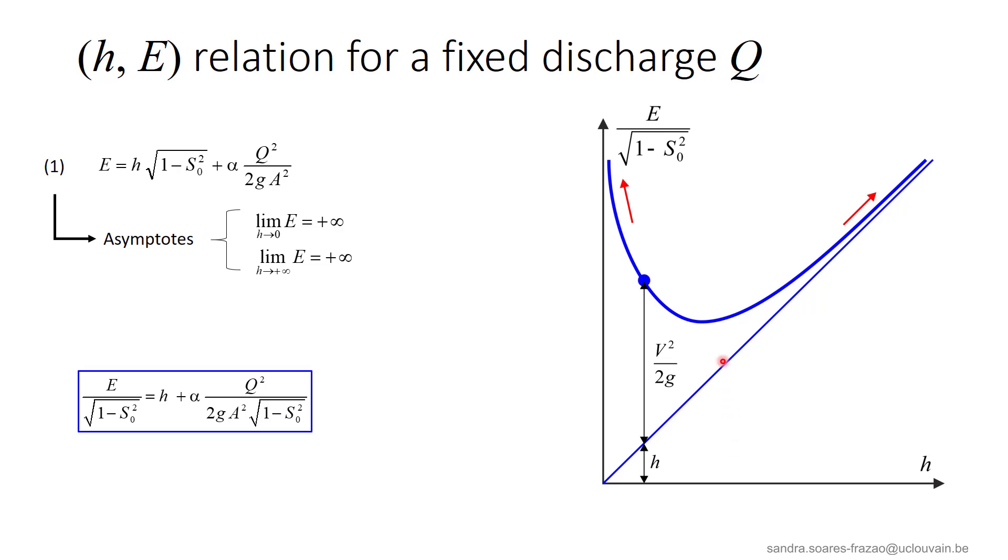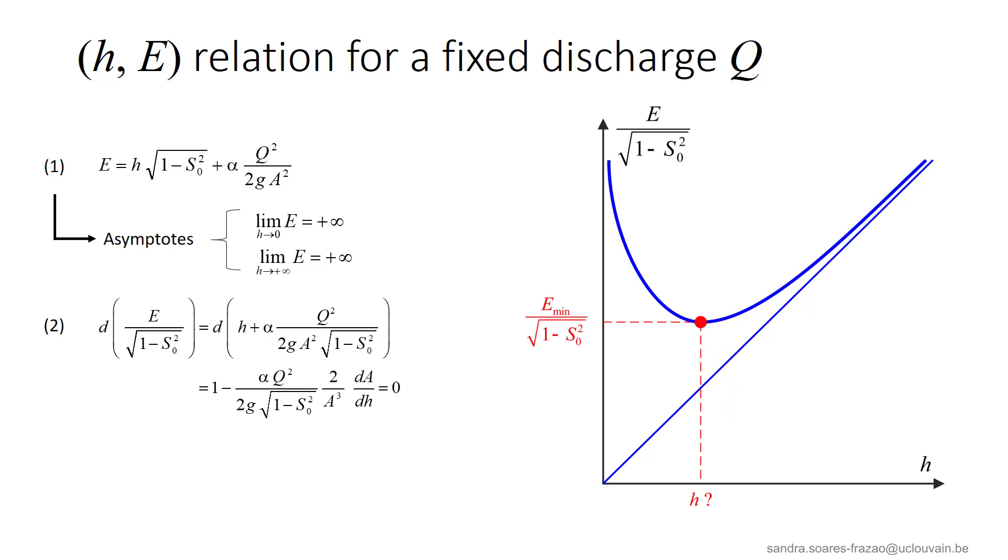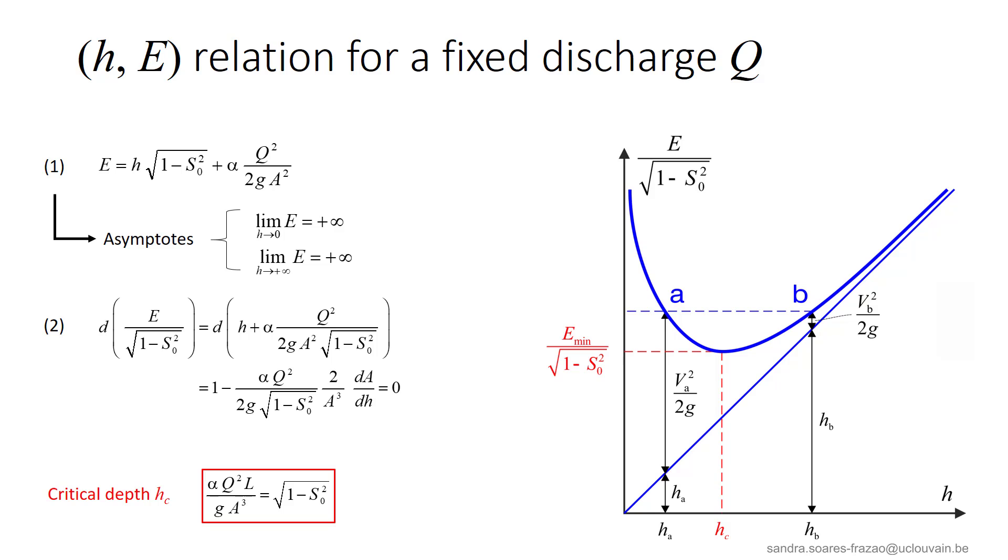And as we can see, this curve presents a minimum that can be found again by taking the derivative of equation 1 as follows. If we remember that dA dH is equal to L, then we find again the expression giving the critical depth. This depth is also the depth requiring the minimum specific energy for a given discharge.